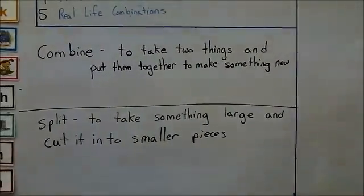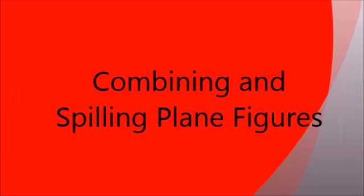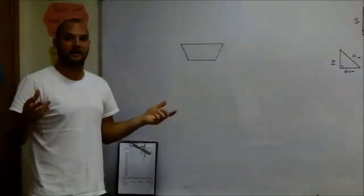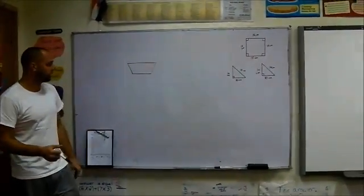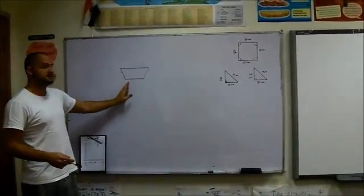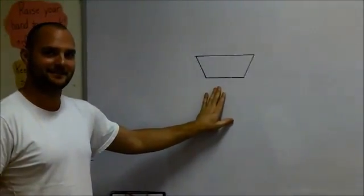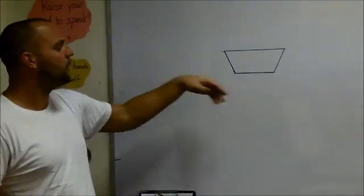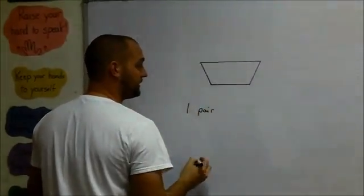Now we're going to talk about actually combining and splitting these plane figures. We've got a couple of things on the board right now. Does anybody know, Miss Heather, do you know what this one is? Is it a trapezoid? It is a trapezoid, very nice. It's a trapezoid because it has one pair of parallel sides.